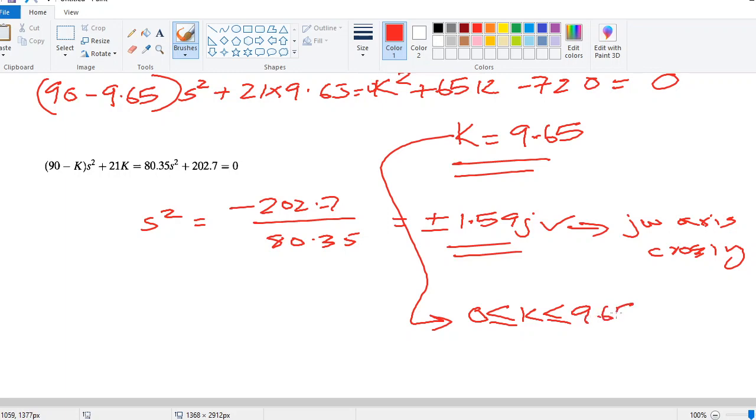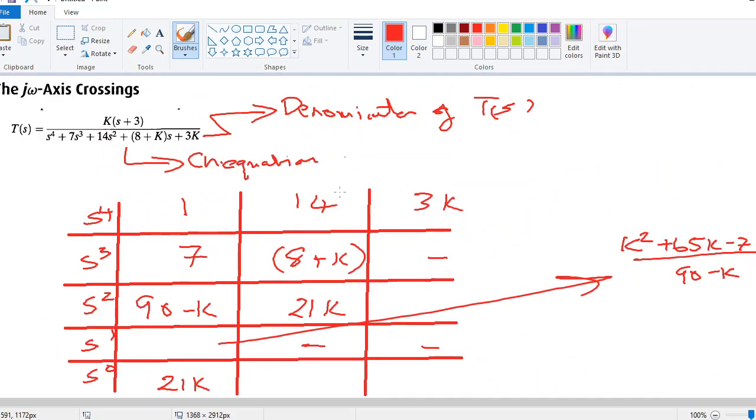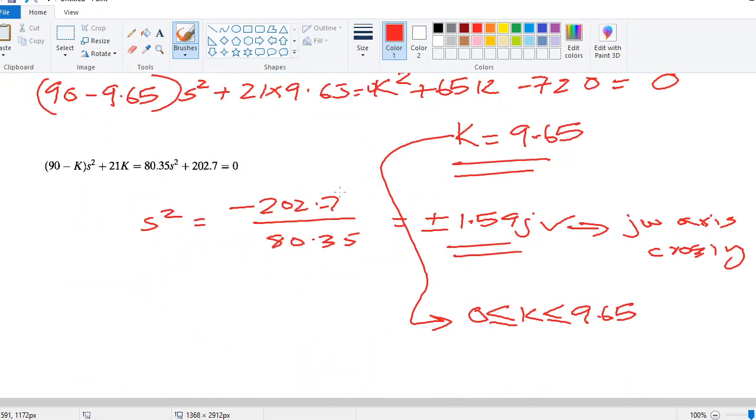That means that this system is stable from zero less than or equal to k to less than or equal to 9.65. Any value greater than 9.65 will result in this specific system being unstable. This is called the range of stability of the system. This is two points that we can calculate with this j-omega axis crossing.